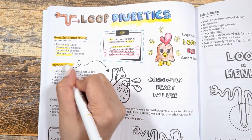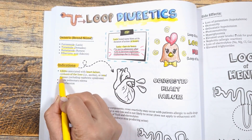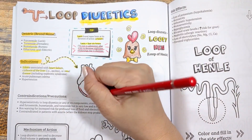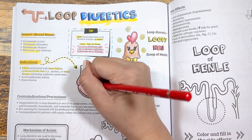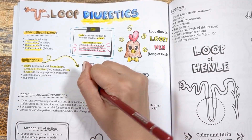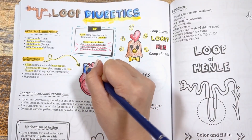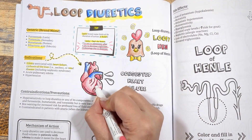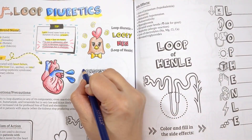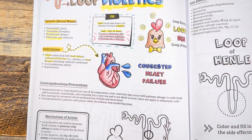Loop diuretics are indicated for the treatment of edema — swelling caused by too much fluid trapped in the body's tissues — and this is commonly associated with diseases such as congestive heart failure, liver cirrhosis, or renal disease. Because of their ability to lower blood pressure by inducing sodium and fluid loss, they can also help with hypertension.